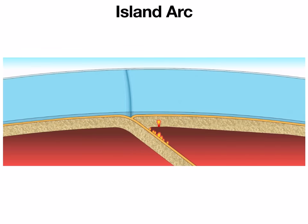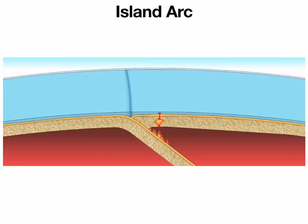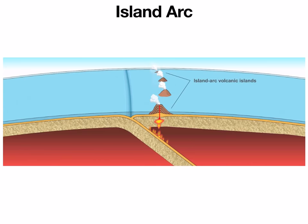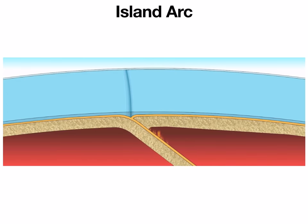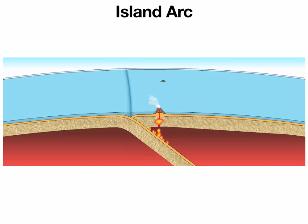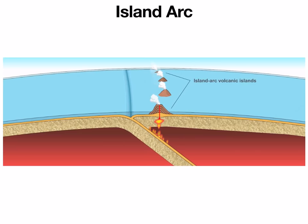We also have island arcs — very similar to a subduction zone, but with oceanic-to-oceanic crust, so no continents involved. It's a little hard to tell which plate will subduct since they both have the same density, but eventually one plate — usually the older rock — will sink under the younger rock. Again we get melting, which causes rising magma to create active volcanoes, which in this case form volcanic islands out in the middle of the ocean. We also get a trench and lots of active earthquakes along the subducting plate.